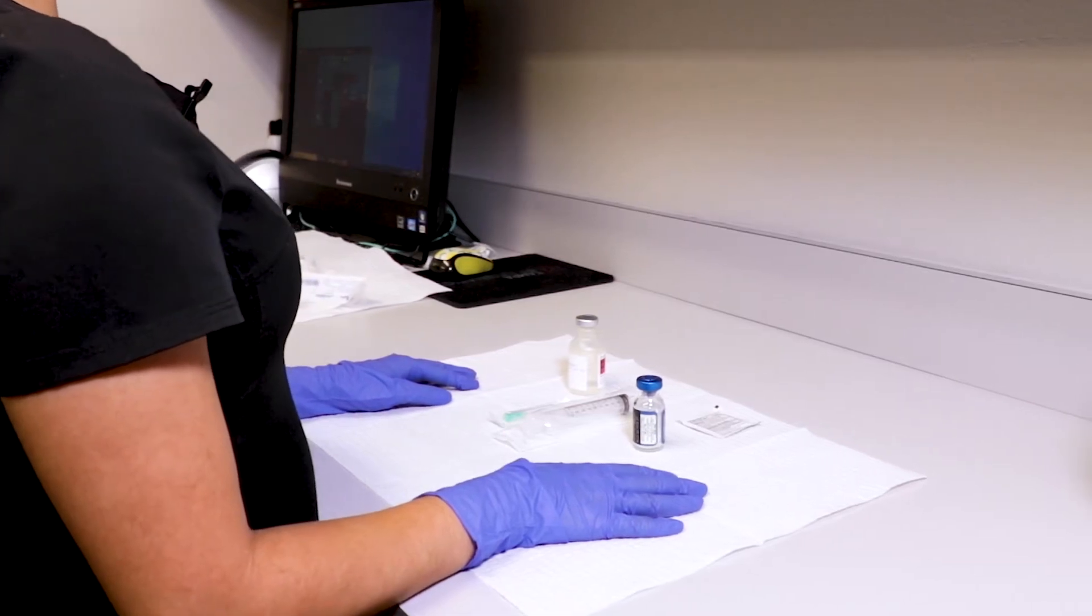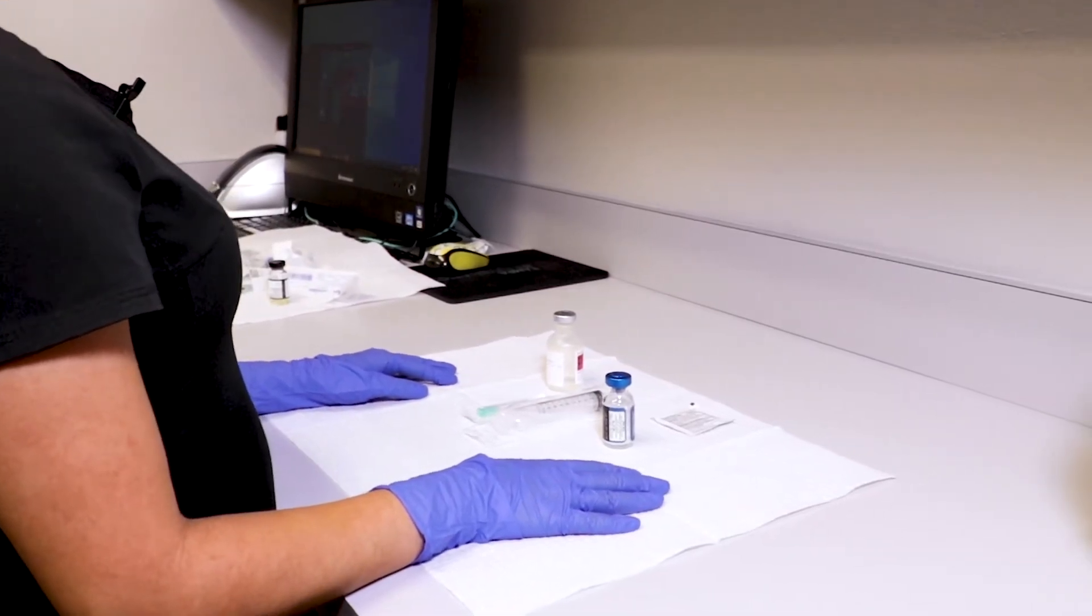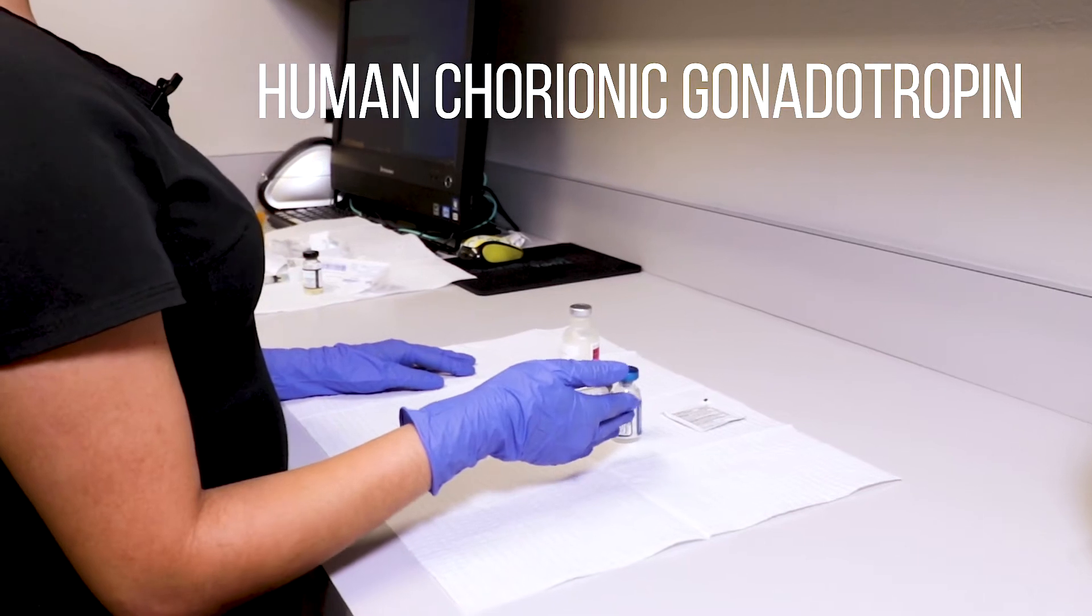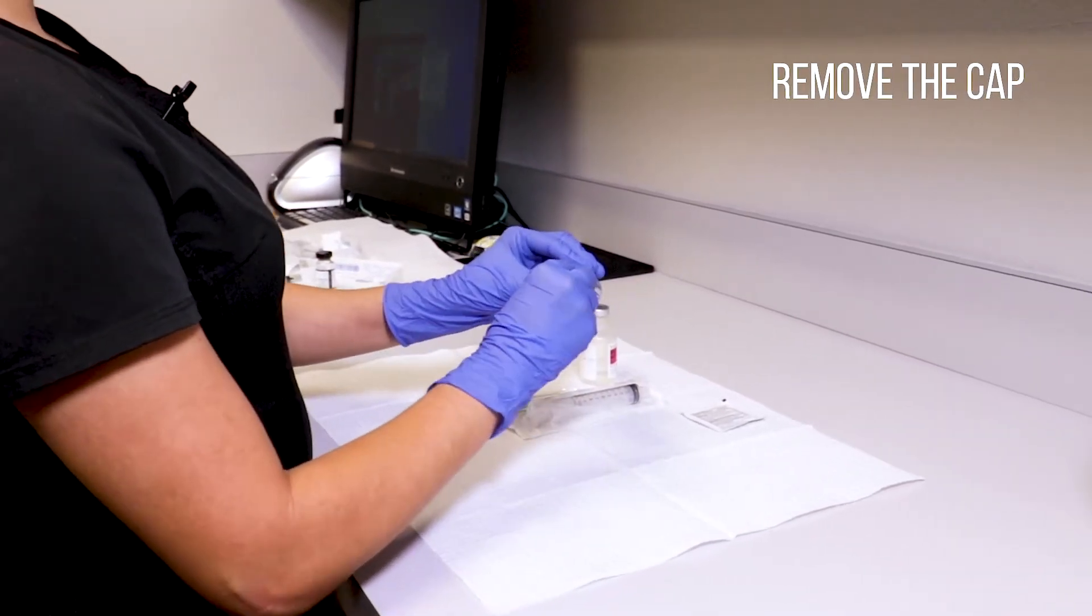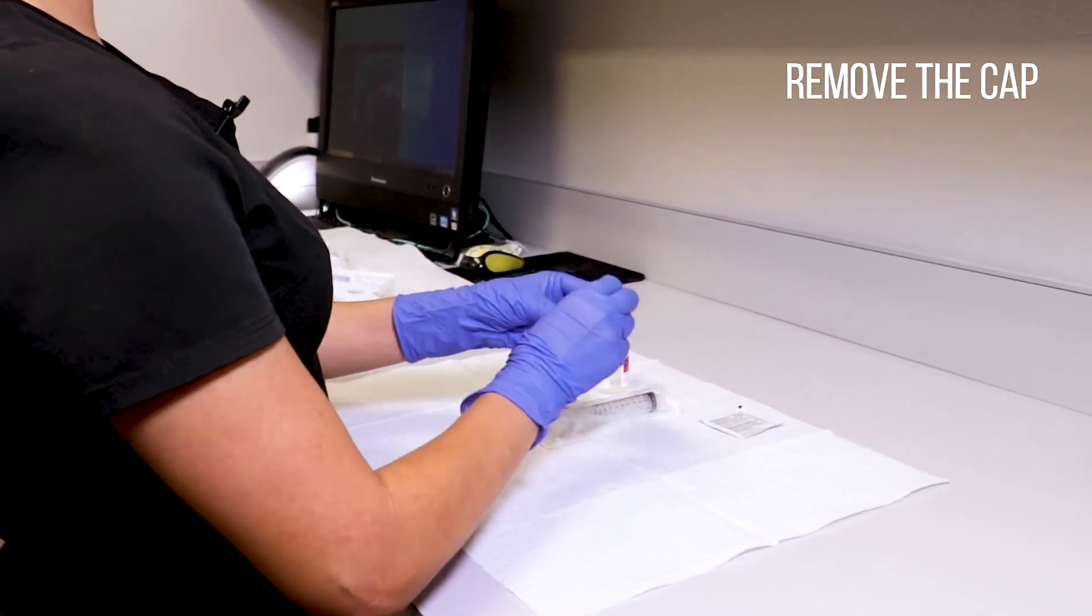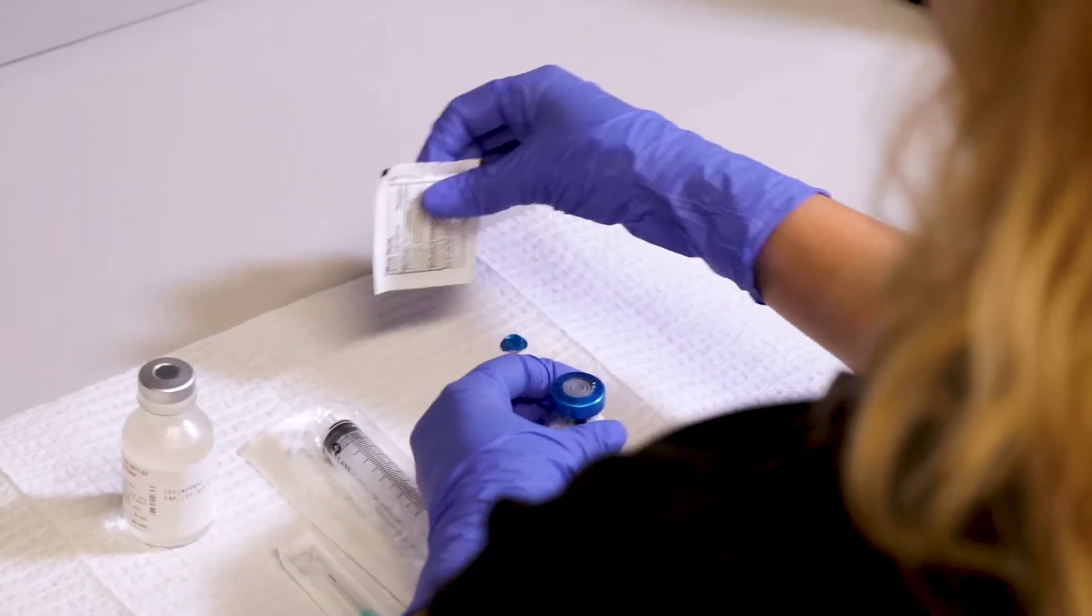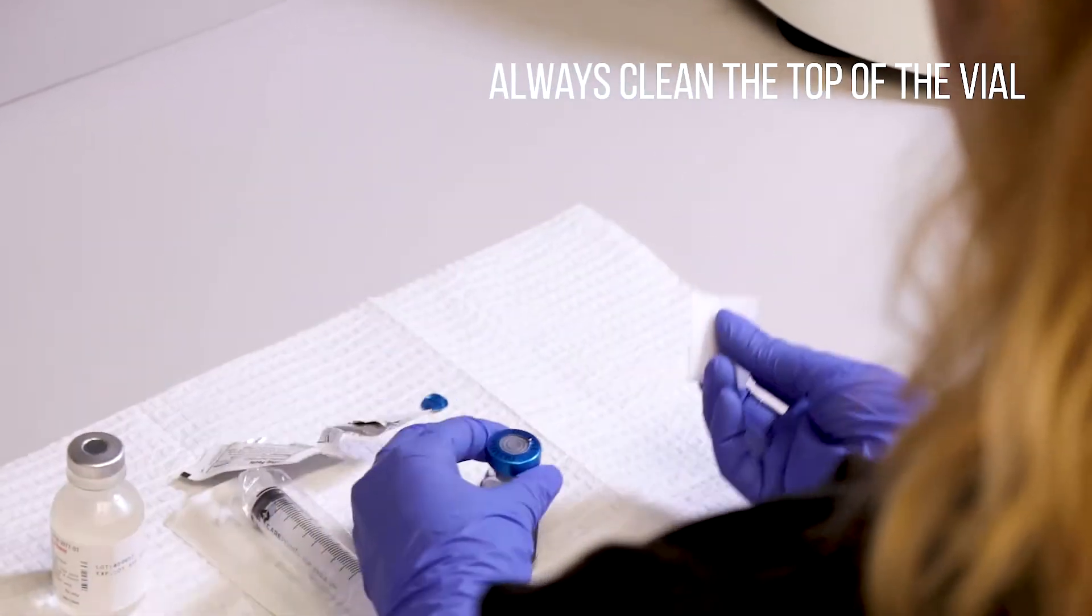In the following video we'll be going over how to reconstitute medication. In this case we have ACG on hand. The first thing you want to do is remove the cap and we always clean the top of the vial.